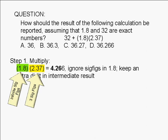while 1.8, which is an exact number, has an infinite number of significant figures. Therefore, 4.266 should be rounded off to only three significant figures.